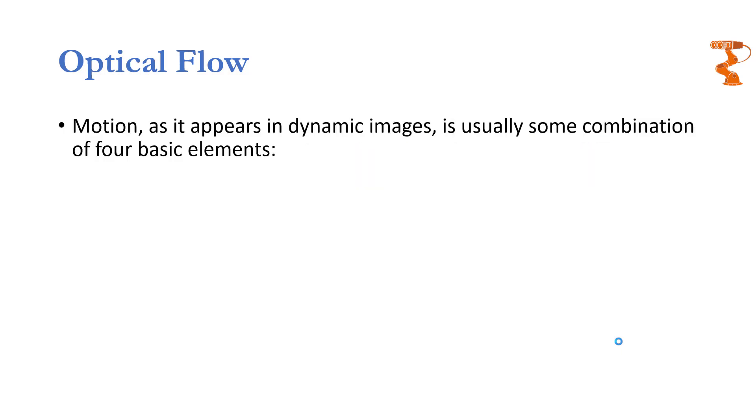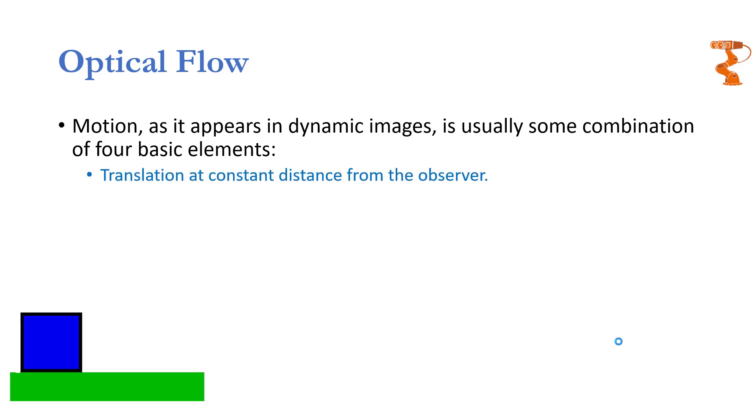Analysis of flow fields generated through optical flow method can reveal information about the motion. The motion considered over here can be of four different types. In all these types, the camera position remains static. The first type is when the object translates at a constant distance from the observer.